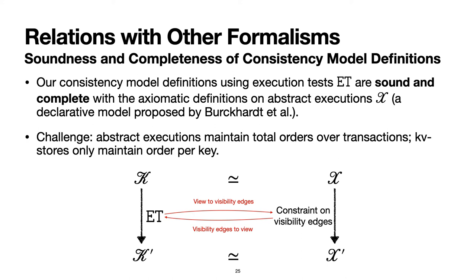In abstract execution, consistent models are defined as constraints on visibility edges. For each consistent model, we show an equivalent relation between execution test ET and constraints on visibility edges. We then plug this relation into constructors, which lift the equivalence to the single-step level: given an equivalent key-value store k and abstract execution x, after one step the resulting k' and x' are still equivalent.